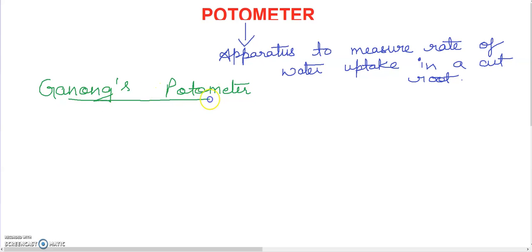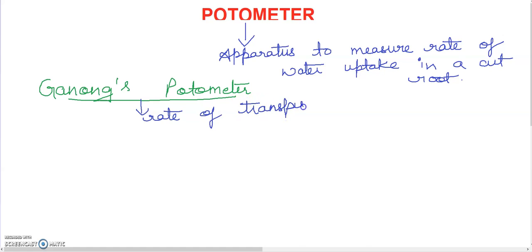Basically, it is used to measure the rate of transpiration in plants. We are using this photometer, and this photometer is commercially available.